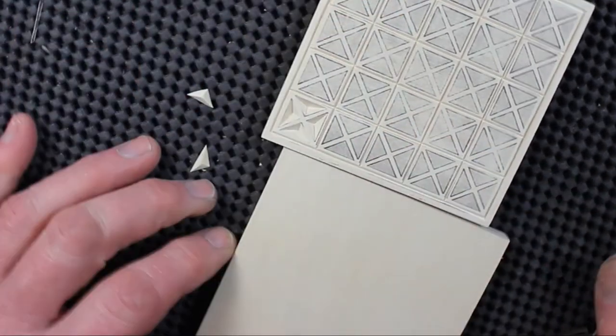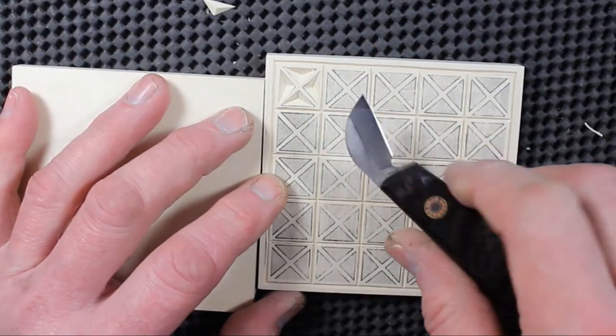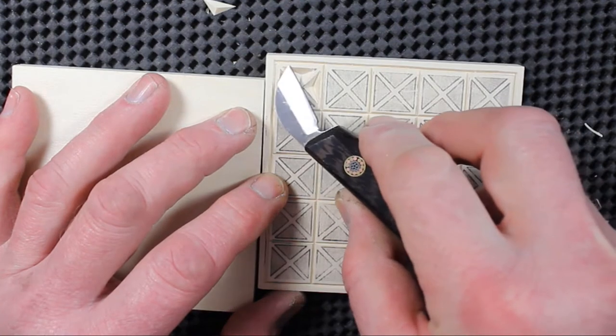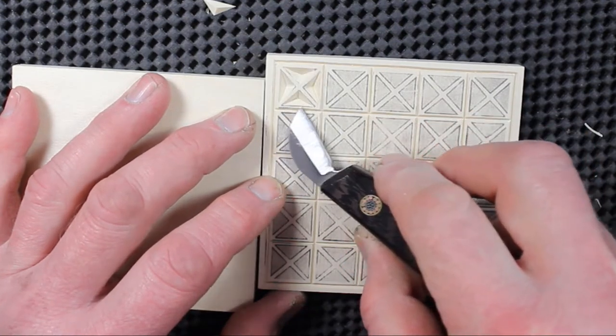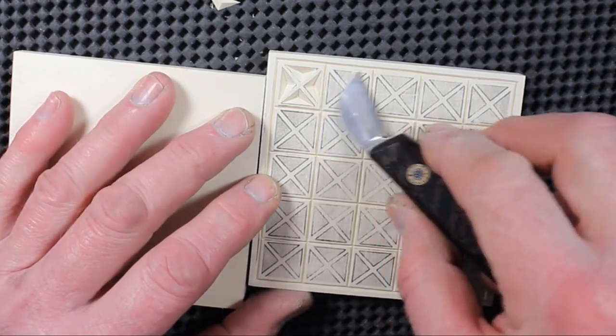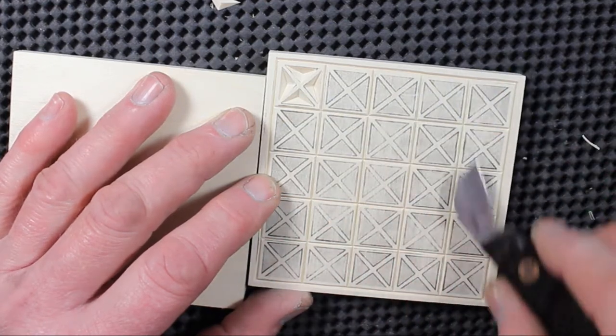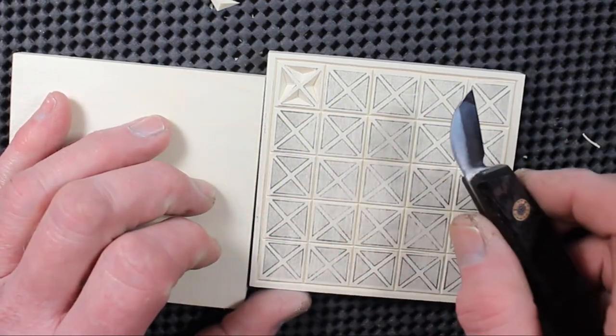See what we did. So by following that order of cuts, we don't get any chip out on the weak areas right along here. So follow that order of cuts, make the outside cuts first, and then follow up from there on every square inside this grid.